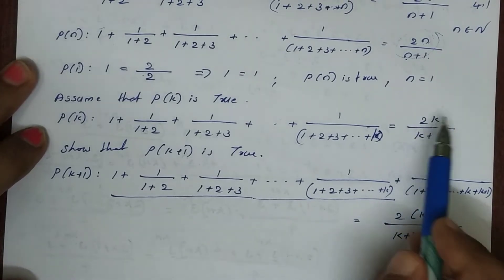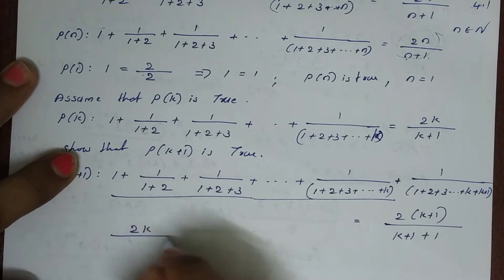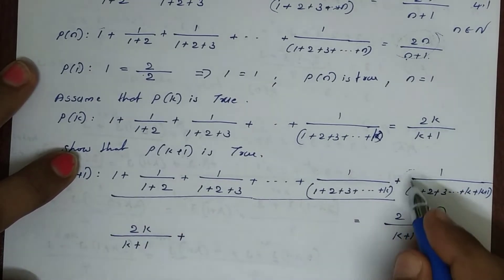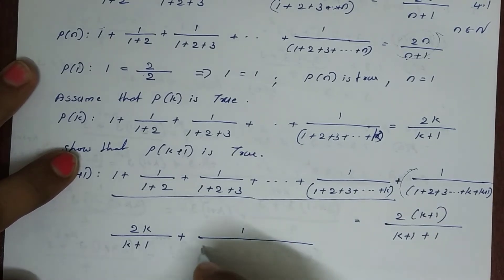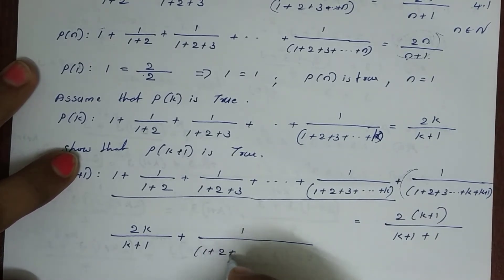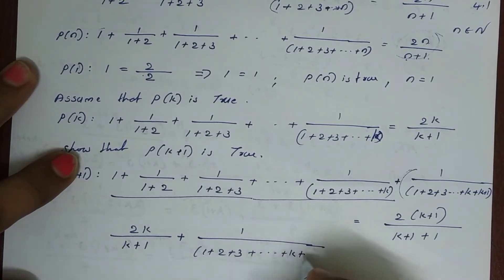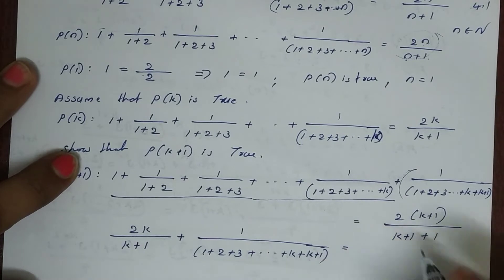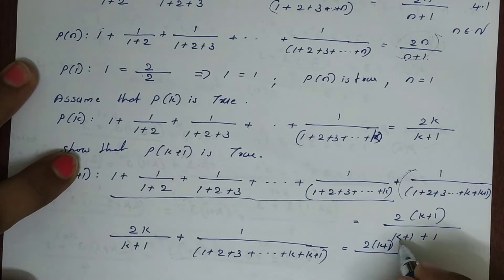Now for the inductive step. Assume P(k) is true, that is, the sum equals 2k divided by (k+1). We need to show P(k+1) is true. The LHS for P(k+1) is 2k/(k+1) plus 1 divided by (1+2+3+...+(k+1)), which should equal 2(k+1) divided by (k+2).